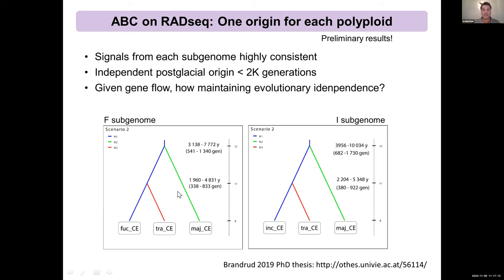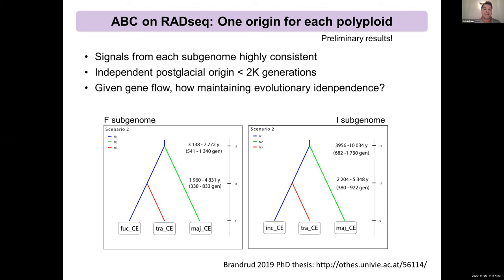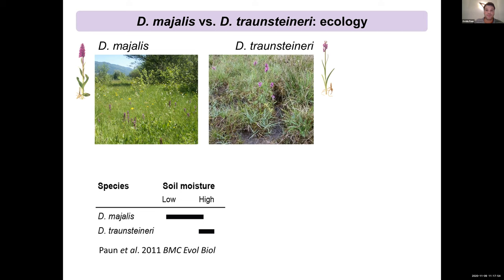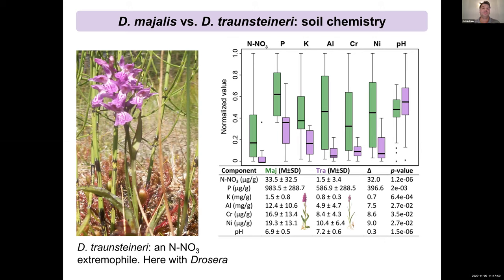Given this gene flow, the question is how these polyploids maintain their evolutionary independence. We should look at the ecological preferences. Majalis prefers mesic meadows, which can go towards dry meadows, while Traunsteineri really prefers wet meadows — you can see water close to a Traunsteineri site, not rivers but a continuous influx of underground water in these habitats. Apart from water availability, we observe that the two polyploids have significantly different preferences for soil chemistry.